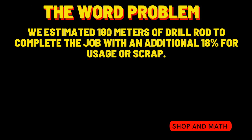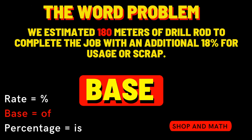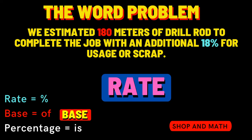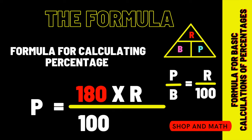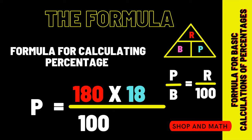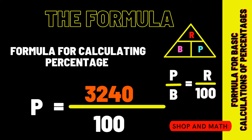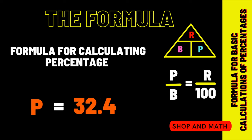Let's identify the base: 180 meters would be our base. Our rate is the percentage — 18. Now that we have our rate and our base, let's calculate our percentage. Base is 180, rate is 18, so 180 times 18 is 3,240 divided by 100 equals 32.4.